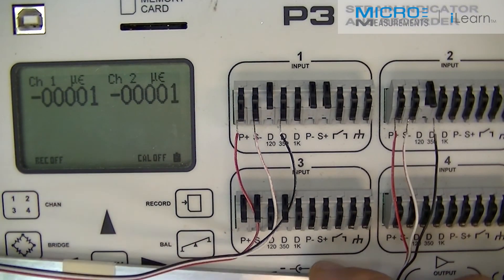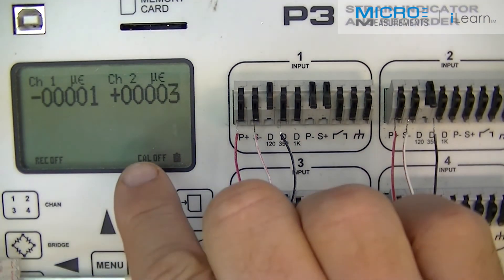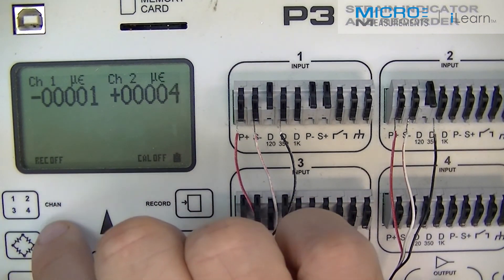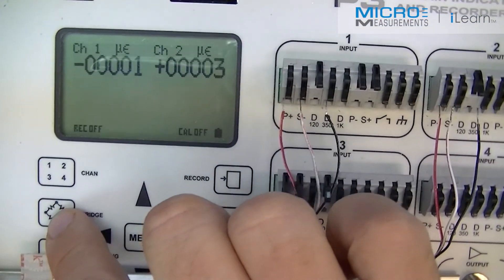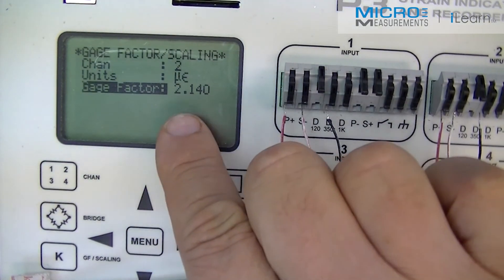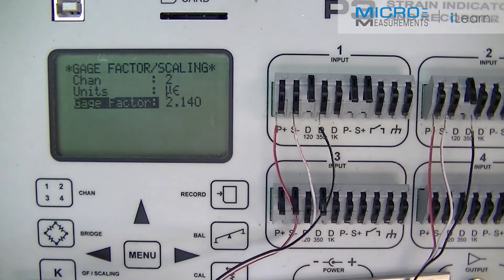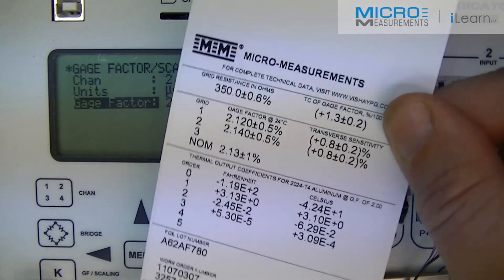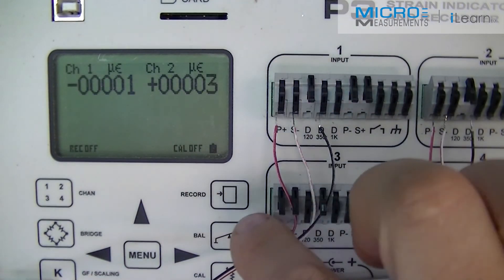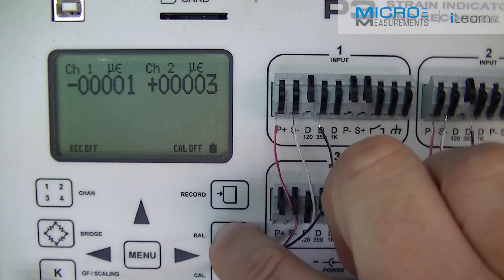Now, what I'm going to do here is I've already set up, I've entered gauge factor, turned on my channel, selected my bridge type for quarter bridge, and I've set gauge factor for grids 1 and 2 to the gauge factor as shown on the engineering data label. With that being done, I'm now ready to zero balance my strain gauge.